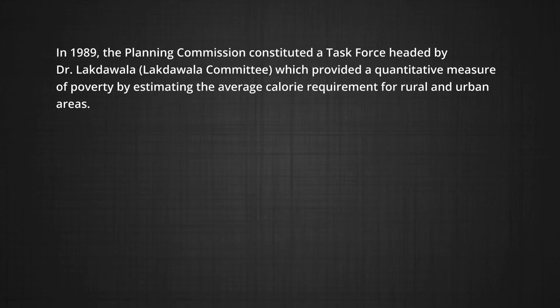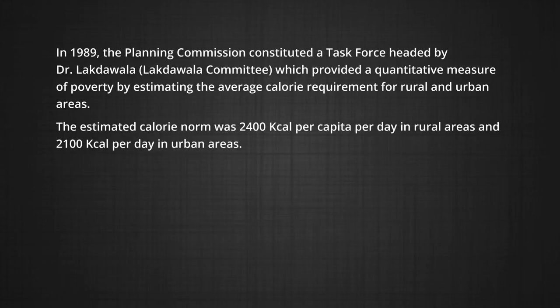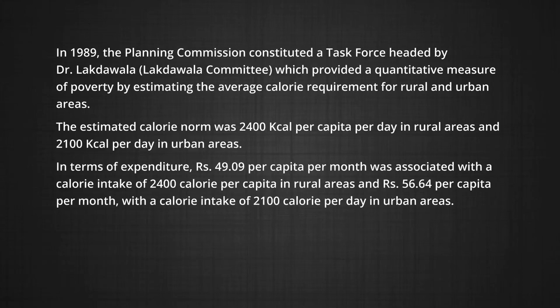The Planning Commission constituted a task force headed by Dr. Lakdawala, which provided a quantitative measure of poverty by estimating the average calorie requirement for rural and urban areas. The estimated calorie norm was 2400 kcal per capita per day in rural areas and 2100 kcal per capita per day in urban areas. In terms of expenditure, rupees 49.09 per capita per month was associated with a calorie intake of 2400 per capita in rural areas, and rupees 56.64 per capita per month with a calorie intake of 2100 per day in urban areas.